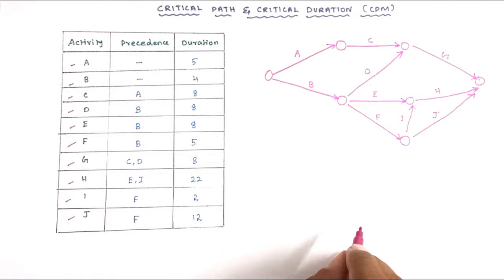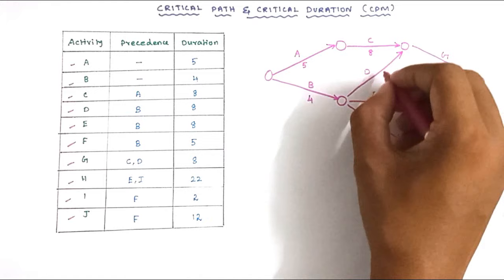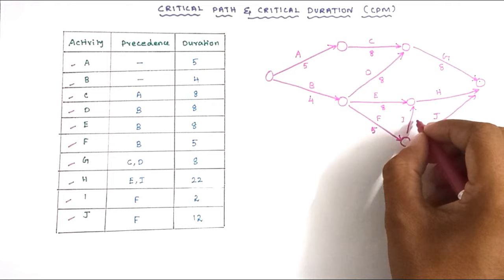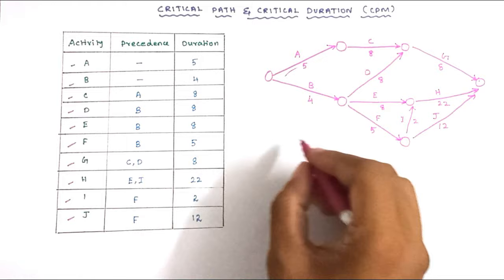In the corresponding activities we put the duration values: A equals 5, C equals 8, B equals 4, D equals 8, G equals 8, E equals 8, F equals 5, I equals 2, J equals 12, and H equals 22. This is how we draw the network path. After that we have to calculate the paths.